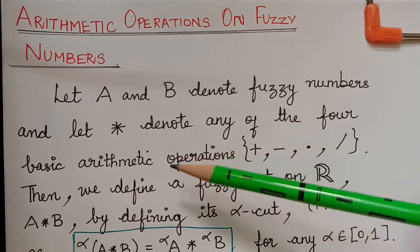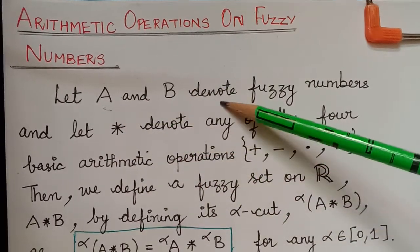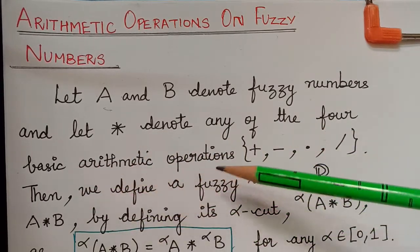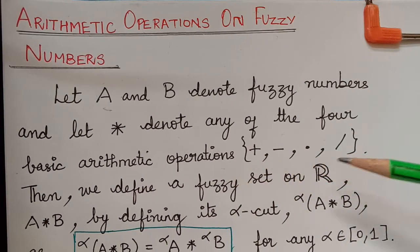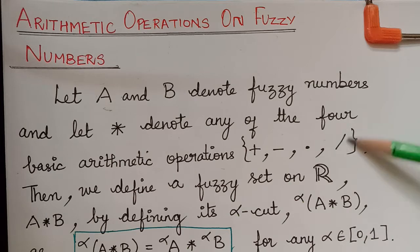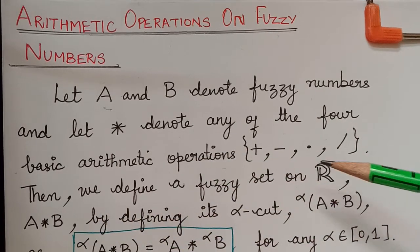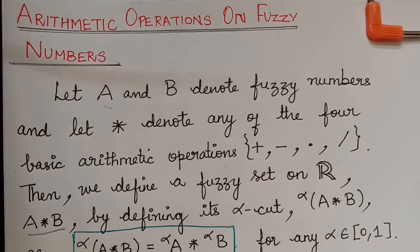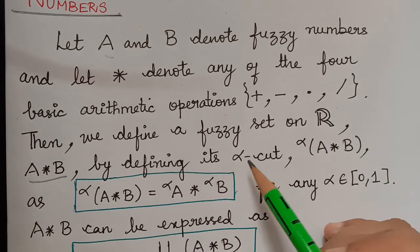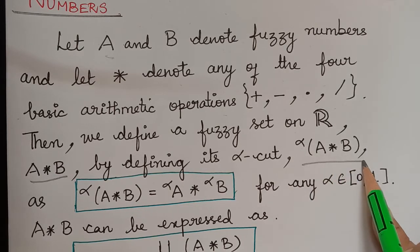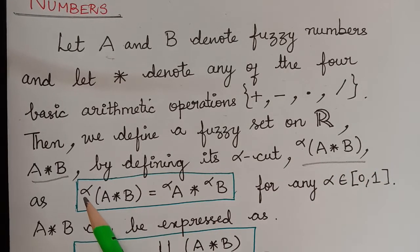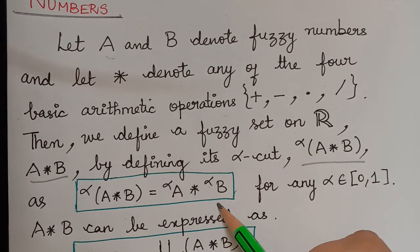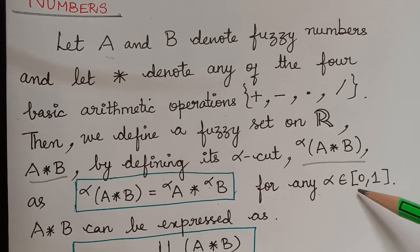What is interval arithmetic? Let A and B denote fuzzy numbers and let star denote any of the four basic arithmetic operations — plus, minus, product, and division. Then we define a fuzzy set on capital R. It is defined by A star B, defined by its alpha cut. The alpha cut of A star B is equal to the alpha cut of A star the alpha cut of B, for any alpha element of the closed interval [0,1].